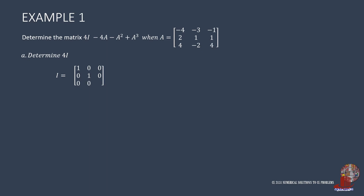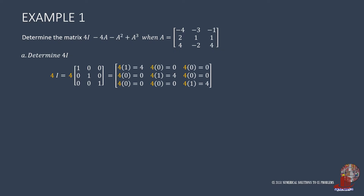I stands for identity matrix, which is a special kind of diagonal matrix with all elements in the diagonal having a value of 1. So 4I means 4 times the identity matrix. By multiplying each term of the matrix by 4, we get 4I as a matrix with diagonal elements equal to 4 and the rest of the elements being 0.